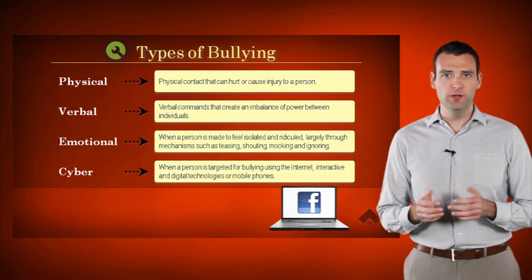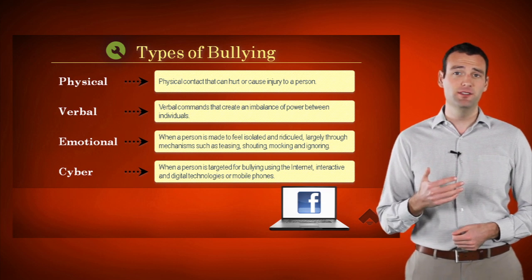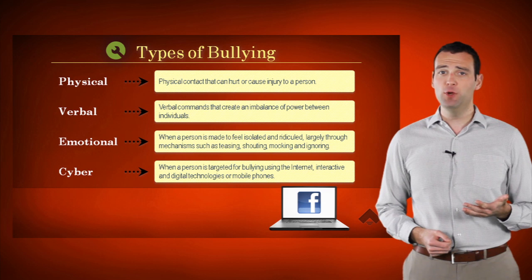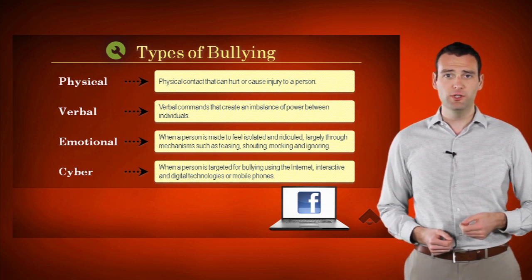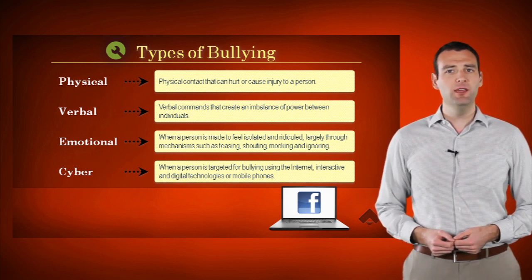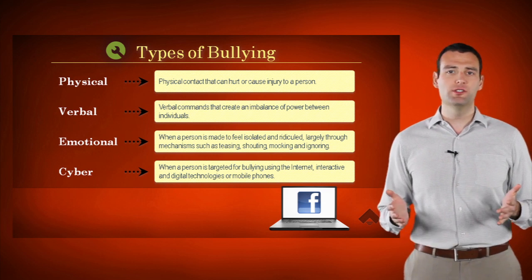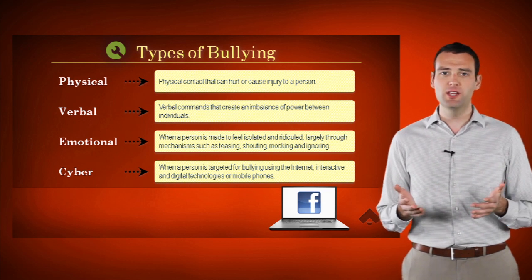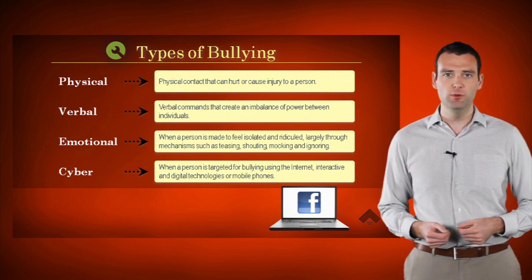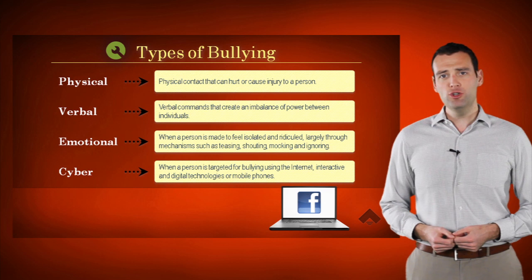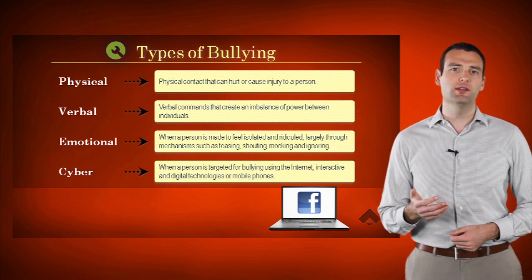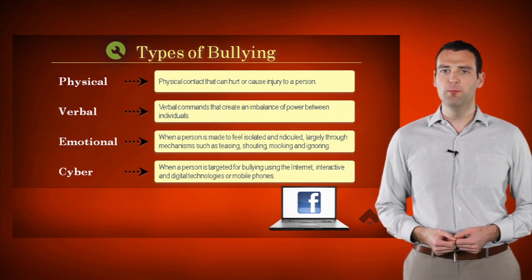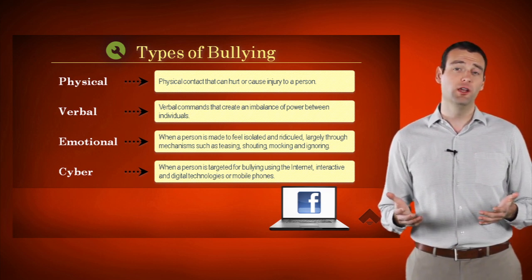Verbal bullying involves comments that create an imbalance of power between individuals. Examples include name calling, jokes that imply offensive remarks, and making fun of a person's gender, sexual orientation, socioeconomic status, religion, body size, or ethnicity.